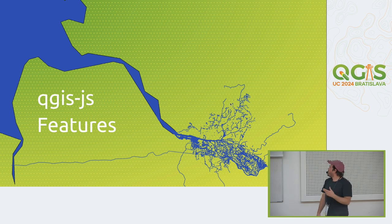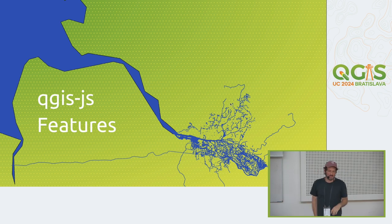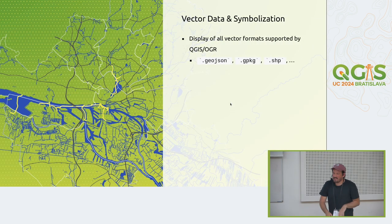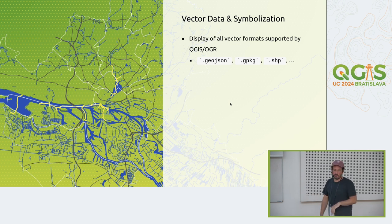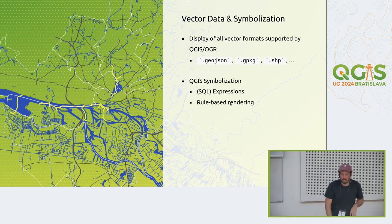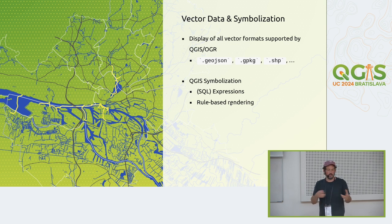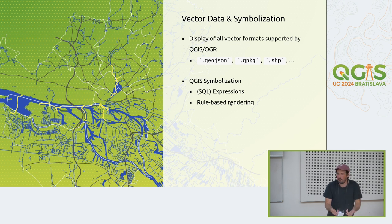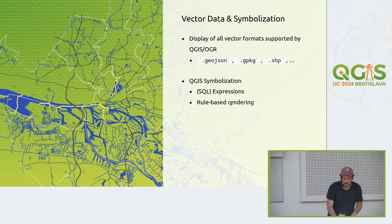Now I want to show some features. Since I live in Hamburg, Hamburg is a good fit. The first thing is vector capabilities: you can open all vector formats that QGIS can load — GeoJSON, GeoPackage, shapefiles, and more. You can symbolize them as we all know and love from QGIS, going crazy with expressions to create really nice symbolization that is generated dynamically in the browser. There's no pre-tiling and no server involved — it's really happening on my machine in my browser.